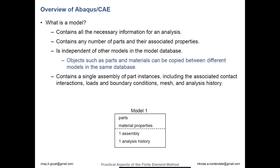What is a model? It has all the information you need for an analysis: your parts, the properties, the boundary conditions, the loads, the mesh — all of that information exists within a model. Your parts and materials can be copied between different models in the same database. This can be useful if you've spent time creating material properties in one model and want to create a new one. The model will also contain a single assembly of your part instances, including any contact interactions, loads, boundary conditions, mesh, and your history.